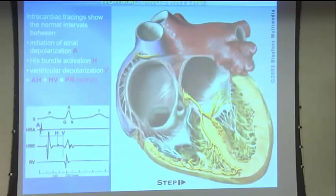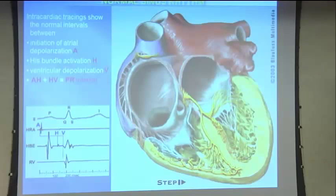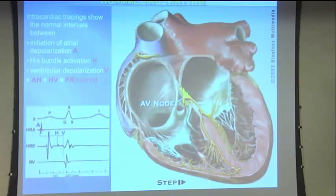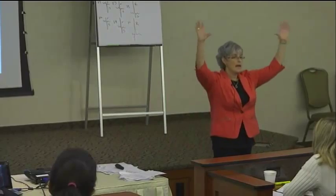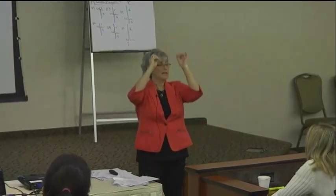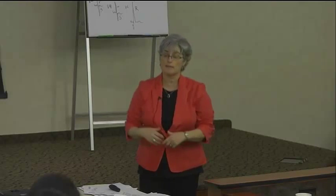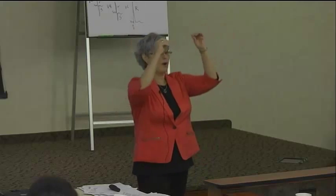If we get a roadblock in the right bundle branch, it doesn't conduct — we call that a right bundle branch block. What happens is the left ventricle depolarizes through its bundles and Purkinje fibers, and then all the impulses have to go to the right side. So the atrium depolarizes, the left ventricle works through the left bundle system, then impulses go to the right — left then right. Would you agree that is a dis-synchrony? Normally they should work together — that is synchrony.